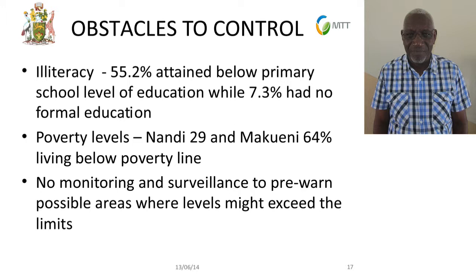Poverty is also a major obstacle. According to the Kenya Demographic Survey, Nandi has 29% of its population living below the poverty line, while Makweni has 64%. This population has no major choices — what they get, they will eat. If we can reduce poverty levels, people may have choices, and choosing safe food could be one of them. But at the moment, food choice may not be on the table for them to consider.